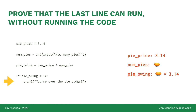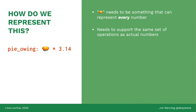If we're on that last line 'print you're over the pi budget', the only way to get there is if the if-statement evaluates to true: pi_owing greater than 10. So we've collected information about the situation the program would be in when we hit that line. Whatever we represent pi as needs to have the same set of operations as the type of value it's standing in for — we need to be able to ask questions like is this value larger or smaller than some float.